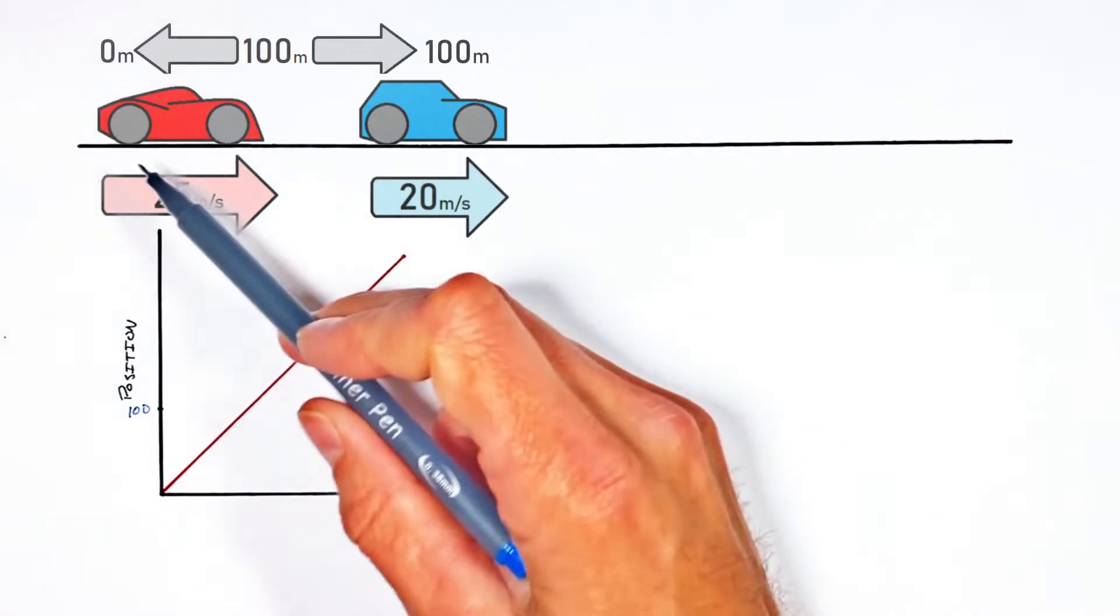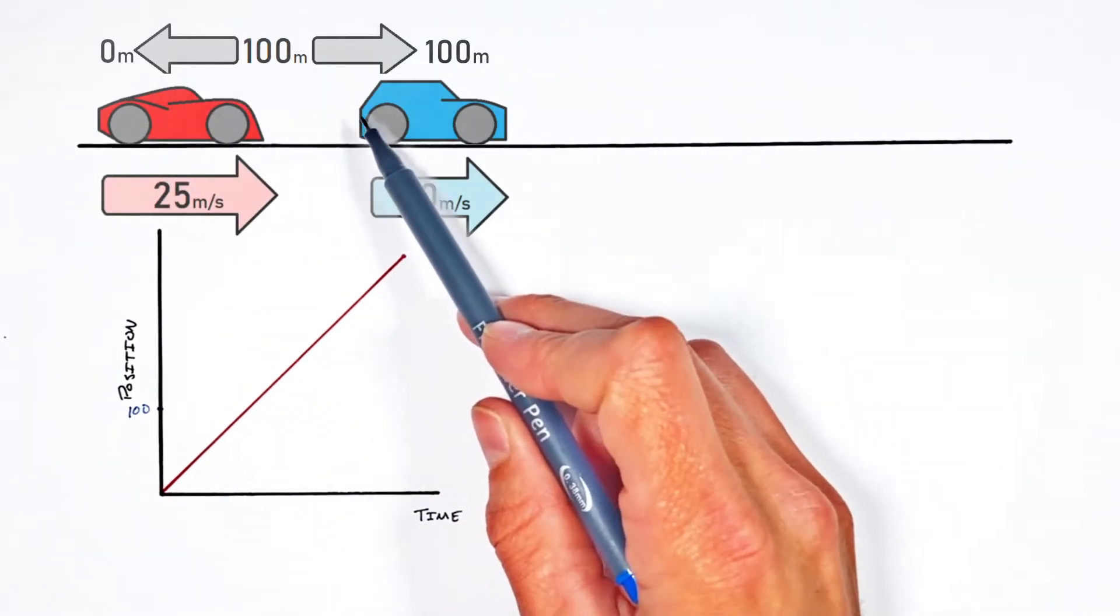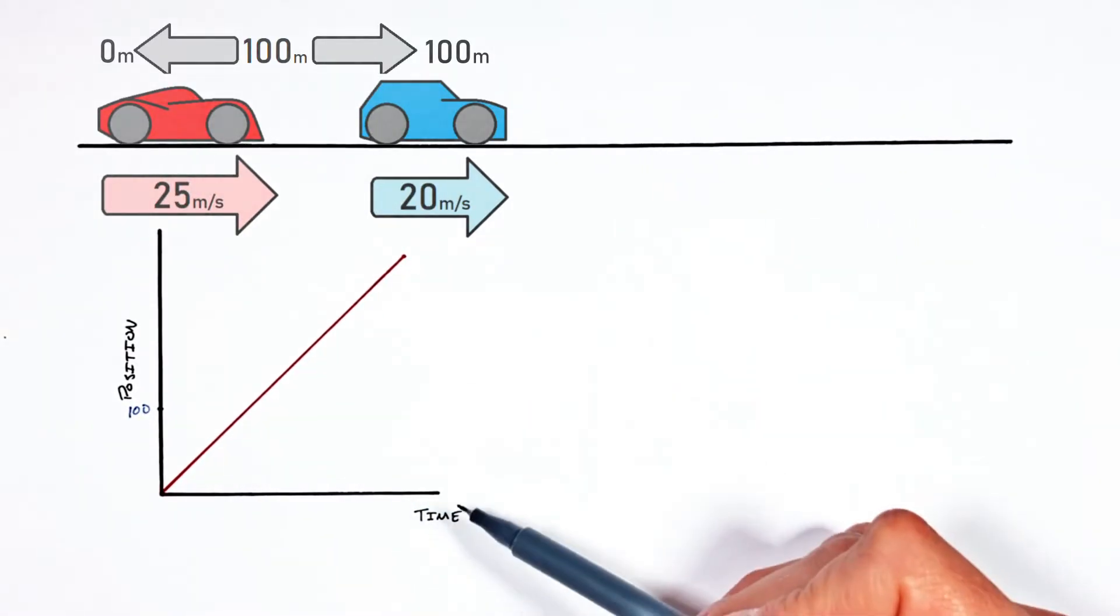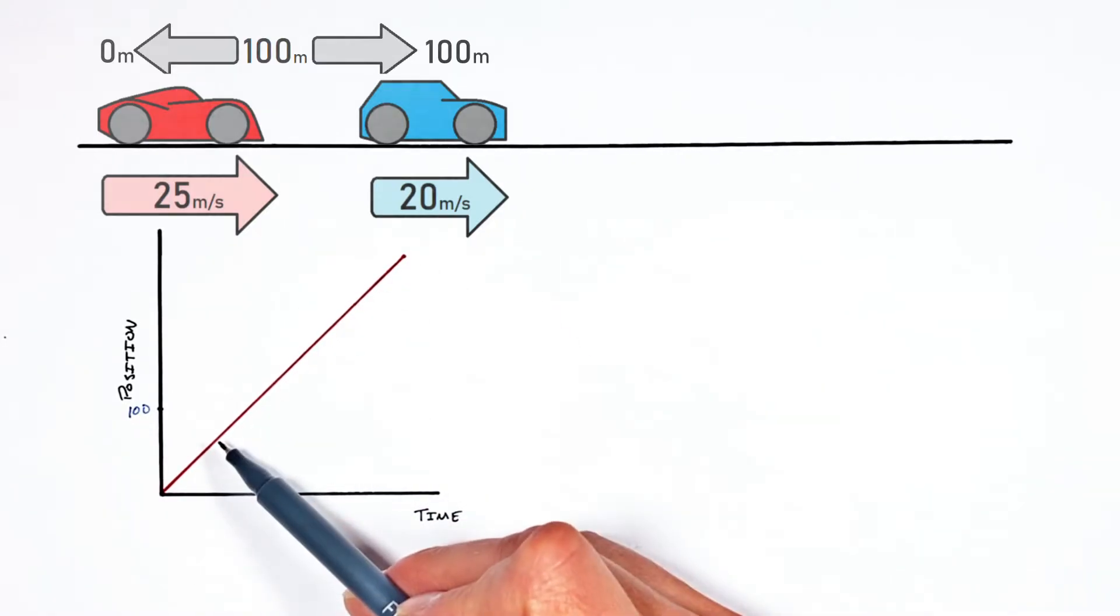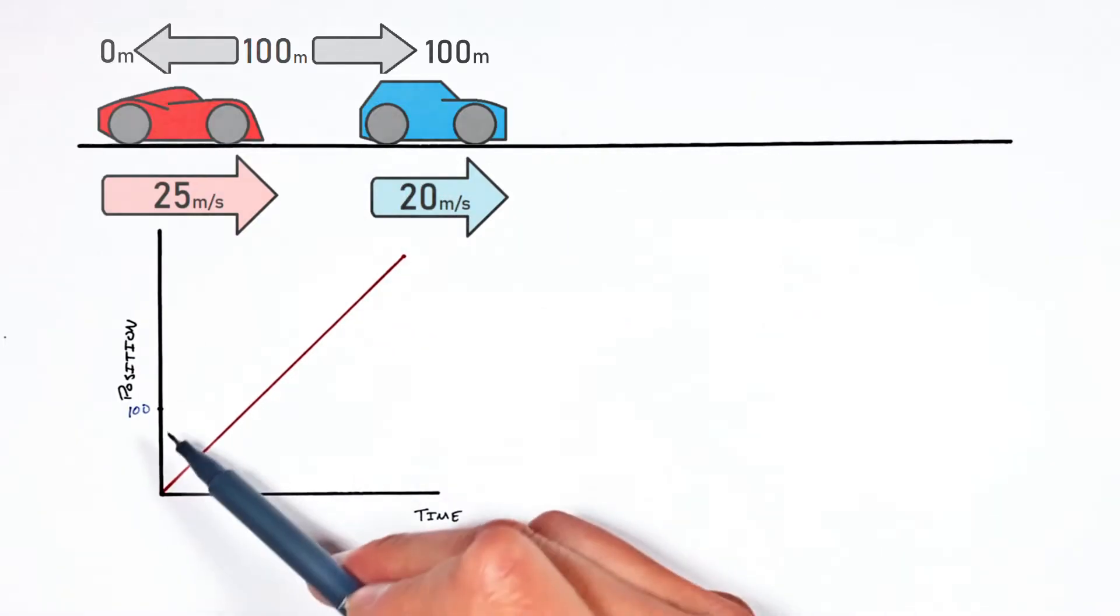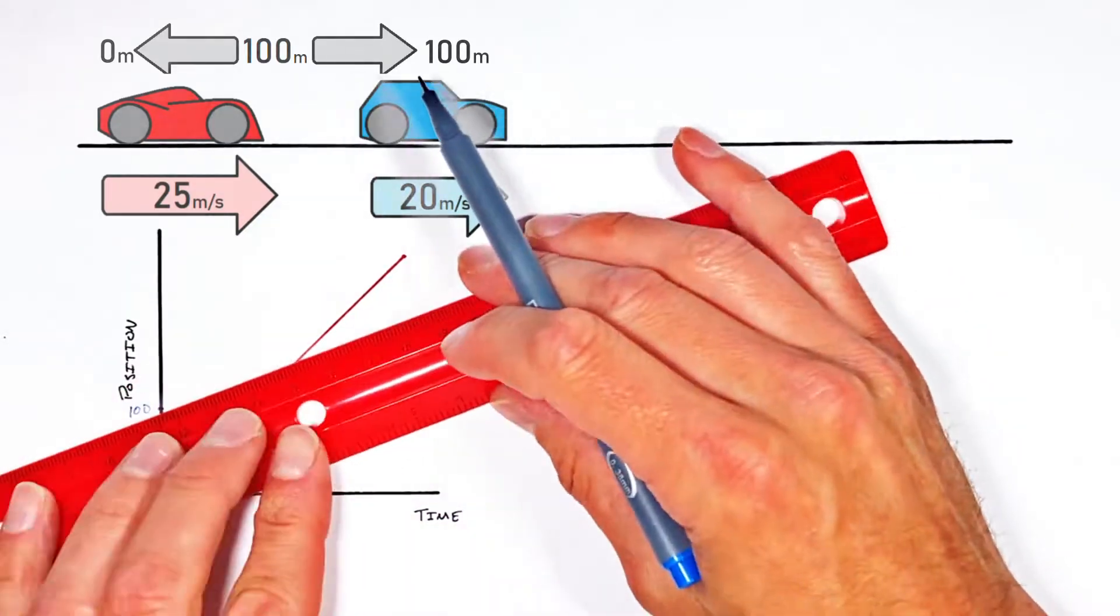And this car is steadily moving down the road just like the faster car, but it's moving slower. And on our position versus time graph, that's going to look like a steady diagonal line, kind of like our fast car. But because the car is going slower, the slope is going to be a little bit more shallow.